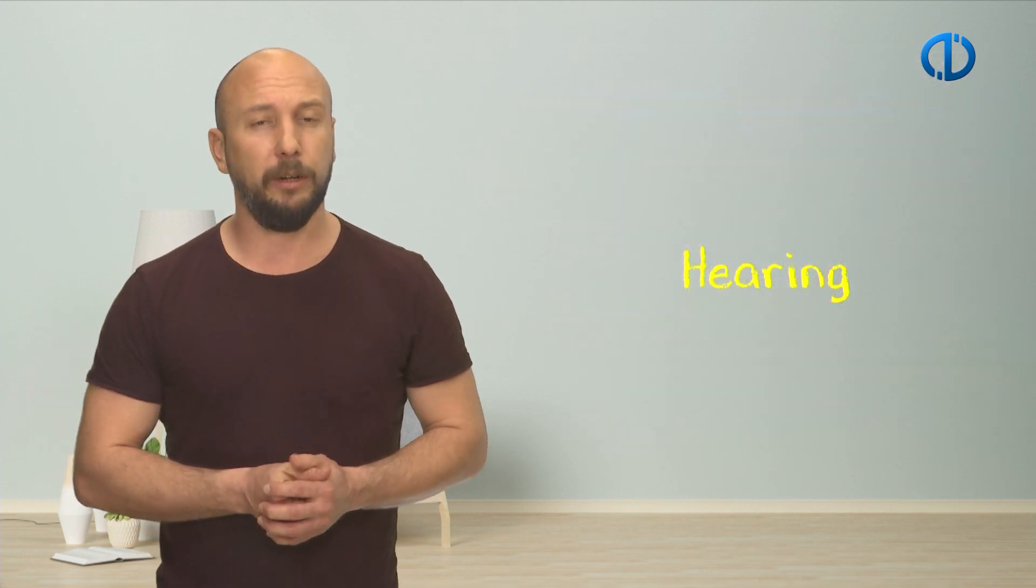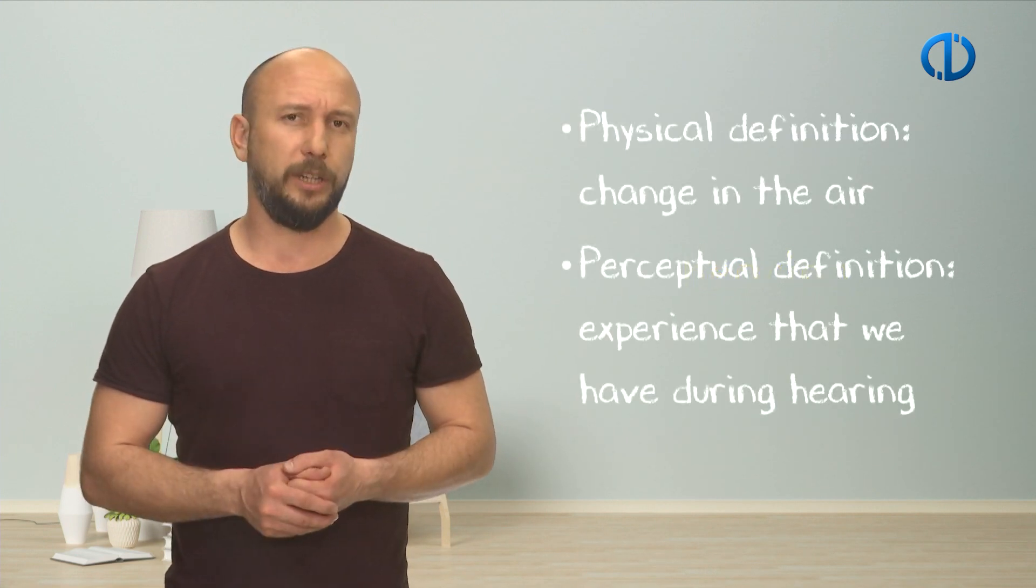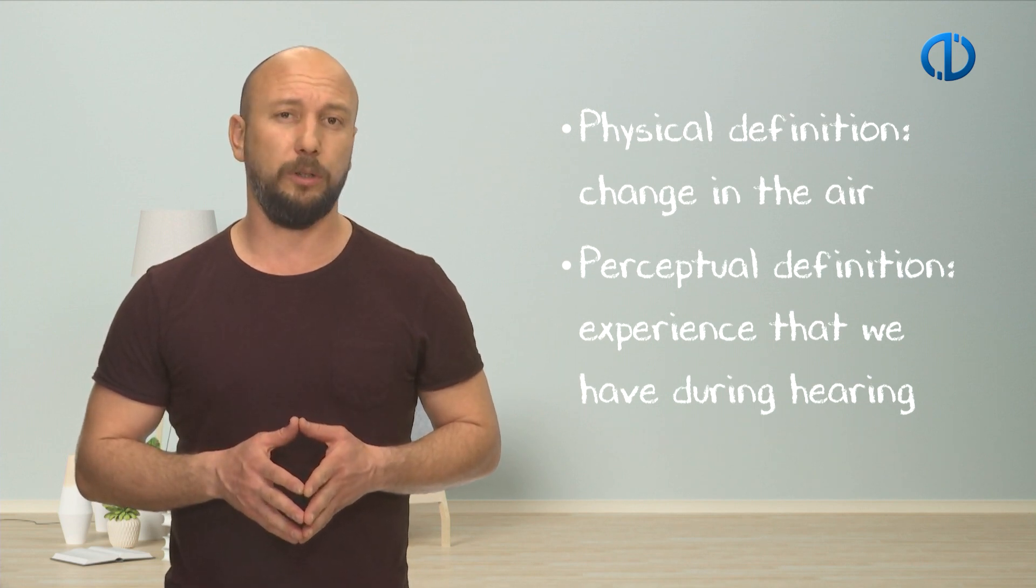Now we can move on to hearing. The ear is the organ of the auditory system. We know that we hear with our ears and what we hear is called a sound. So, can you tell what a sound is? There are two definitions of sound, physical and perceptual.